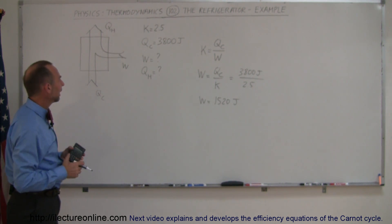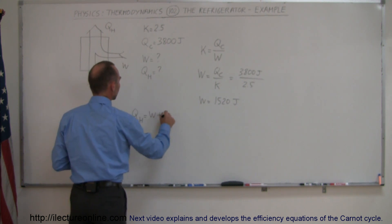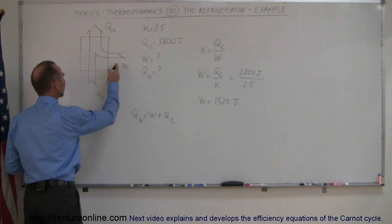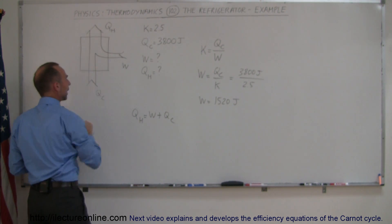How do we find Q_H? That's still the same. Q_H equals the work plus Q cold. You can see that on this diagram: work plus Q cold equals Q hot.